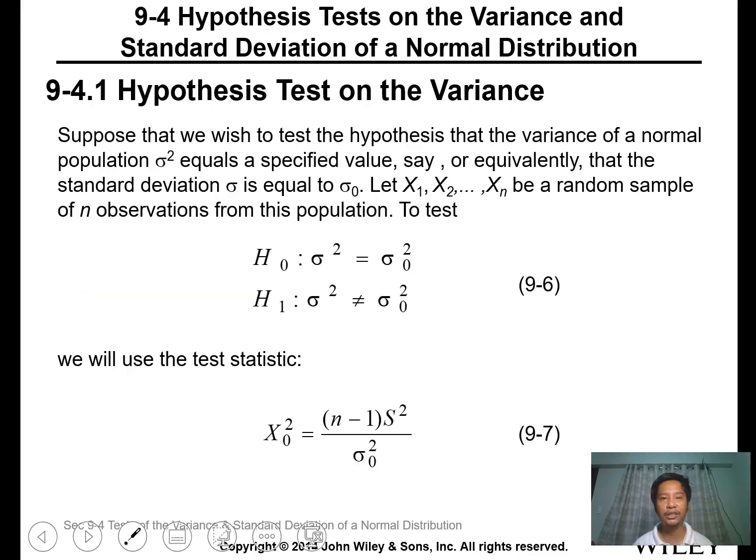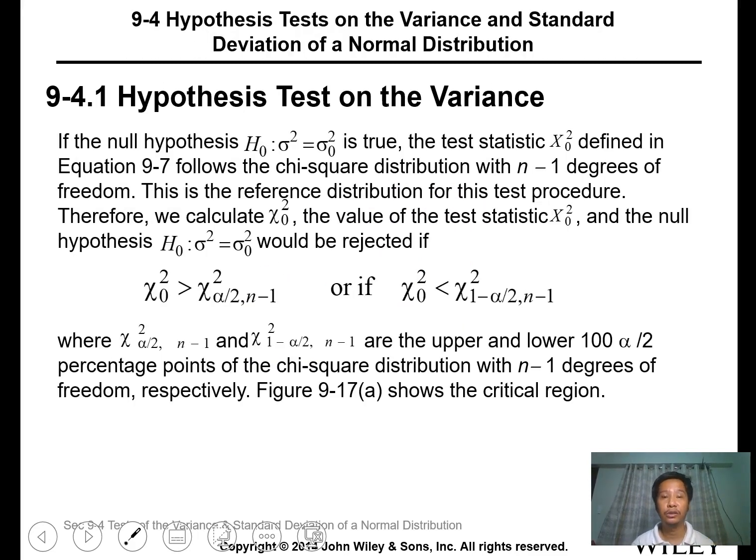Now, hypothesis tests on the variance and standard deviation of a normal distribution. For variance, we use the chi-square test, which equals (n-1)s squared over sigma squared. The hypothesis is that the variance or standard deviation of the population equals your target value, while the alternative is not equal. We reject if the chi-square value is greater than or less than the critical values. You can use the chi-square table.